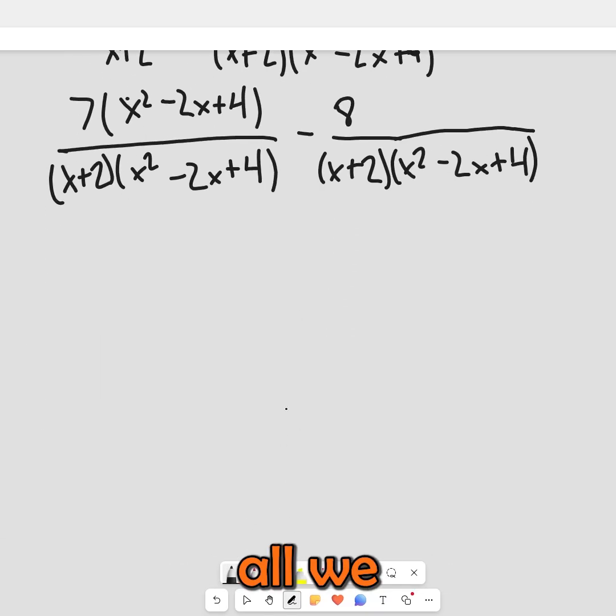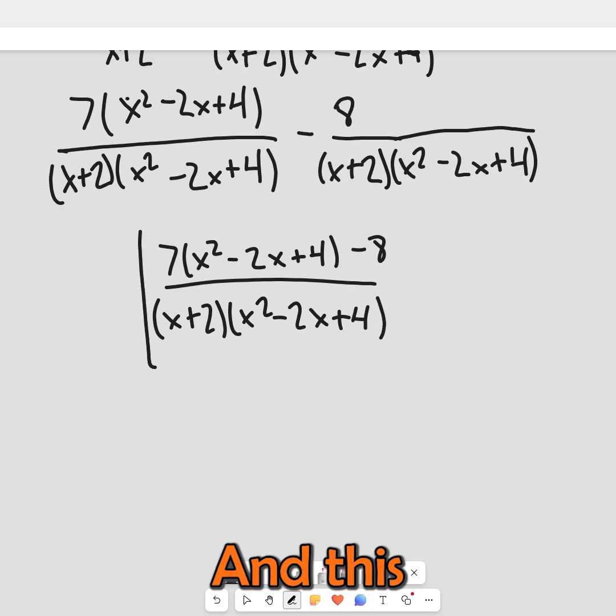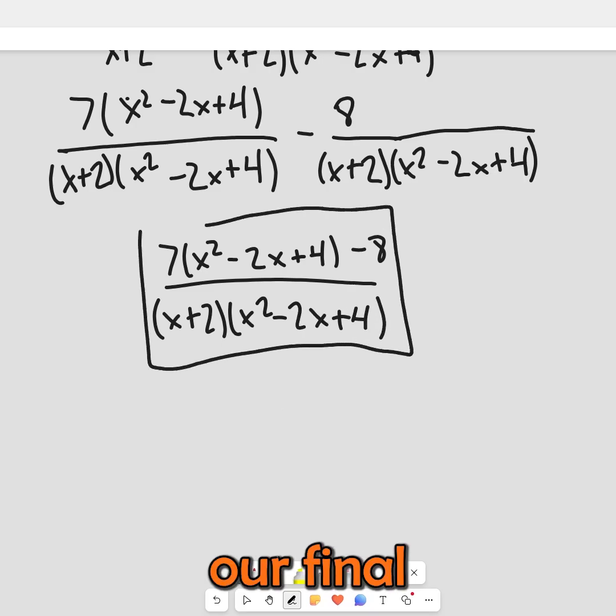So now all we have to do is combine these two. 7 times x squared minus 2x plus 4 minus 8 over our common denominator, x plus 2 times x squared minus 2x plus 4. And this will be our final answer.